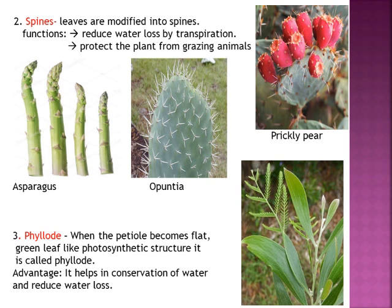Now we come to phyllode. In some plants like Australian Acacia, the leaf lamina is not present, and the petiole becomes flat, green, and photosynthetic — forming a leaf-like structure. In this petiole there are no stomata, or very few stomata, so conservation of water takes place. There is no loss of water by transpiration, since water is lost through stomata in the form of water vapor.